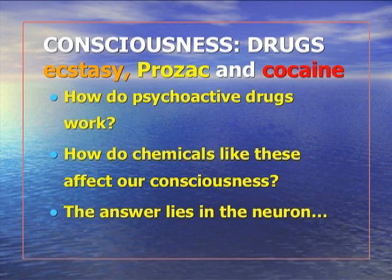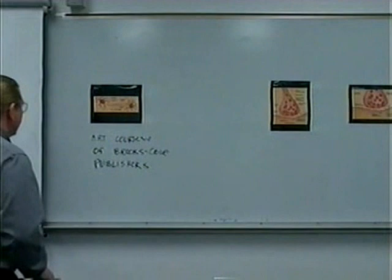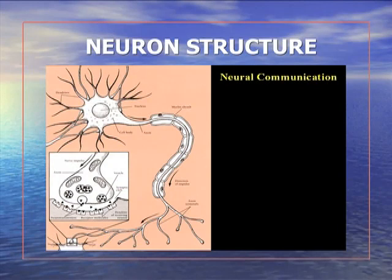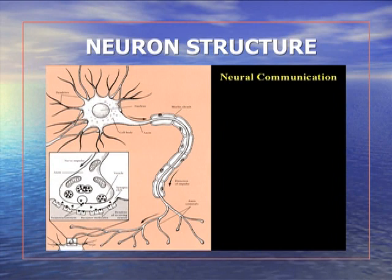We're going to physically look at how these work on the system, starting with the structure of the neuron. You've got the dendrites coming out from one end — ecstasy has a profound effect on those in the long run. There's the cell body where all the work of the cell is done. Then there's the long axon with branches that connect with the next neurons, covered by a myelin sheath, which acts as an insulator that speeds up transmission. A lot of brain disorders involve that myelin sheath breaking down.